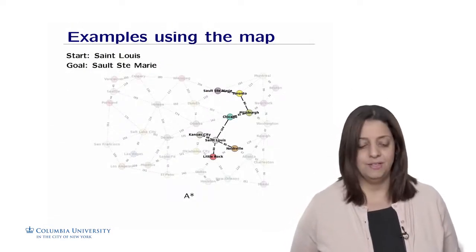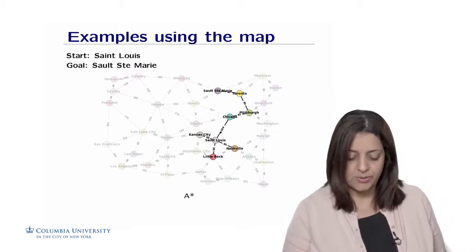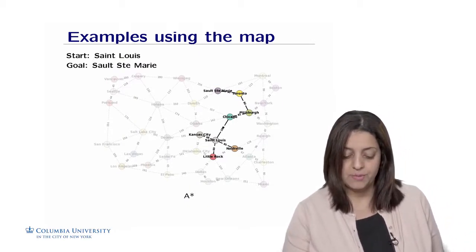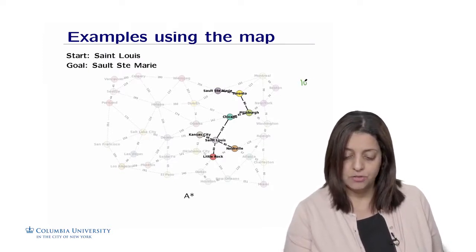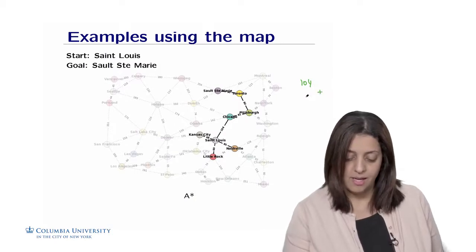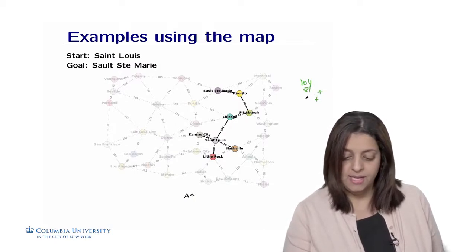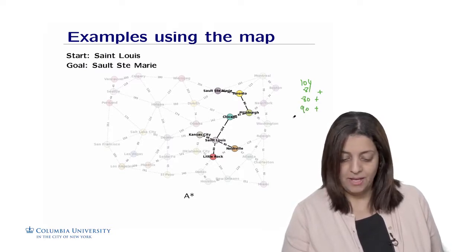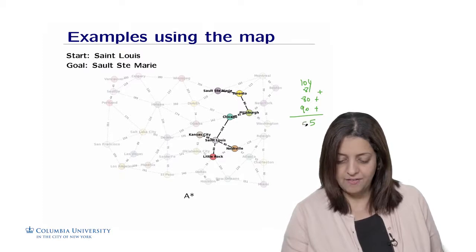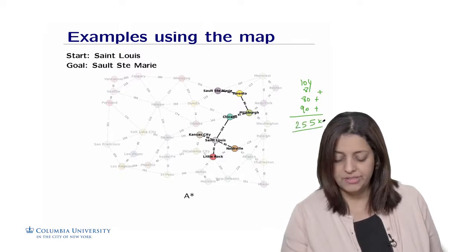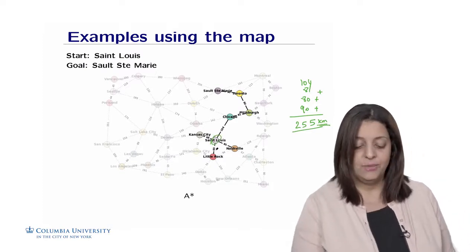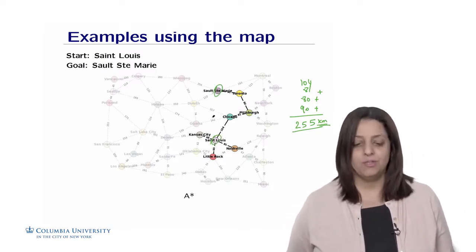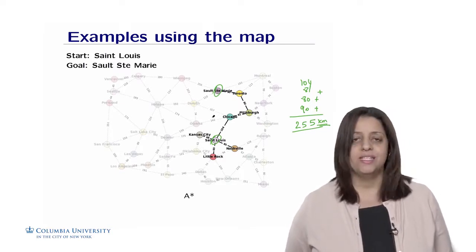On the map, the path found goes from St. Louis through Chicago (104 km), then Pittsburgh (+81 km), then Toronto (+80 km), then South St. Mary (+90 km), for a total of 255 kilometers — which is actually the shortest possible distance between St. Louis and South St. Mary. We found this optimal solution using the A* algorithm.